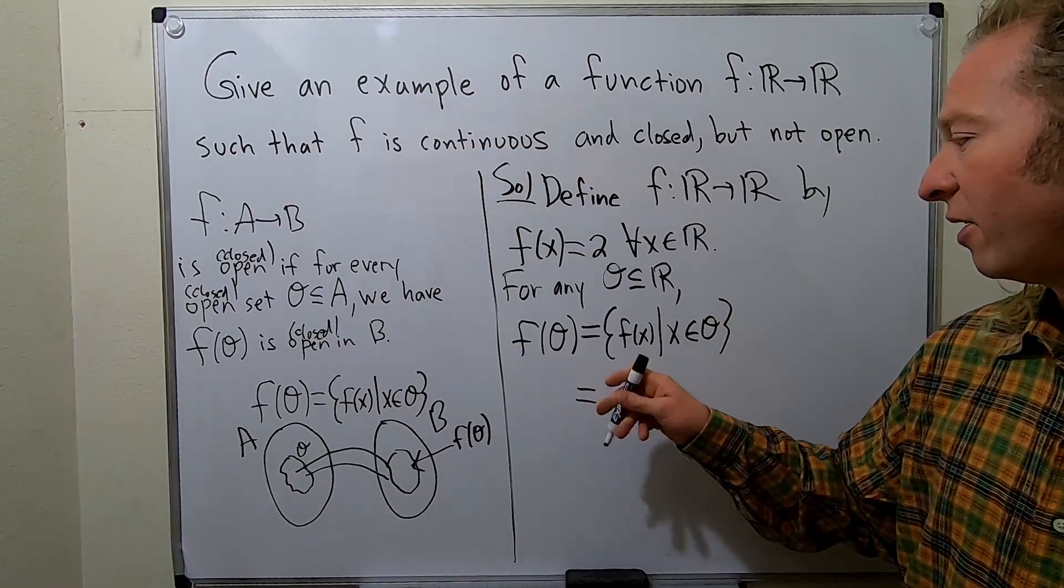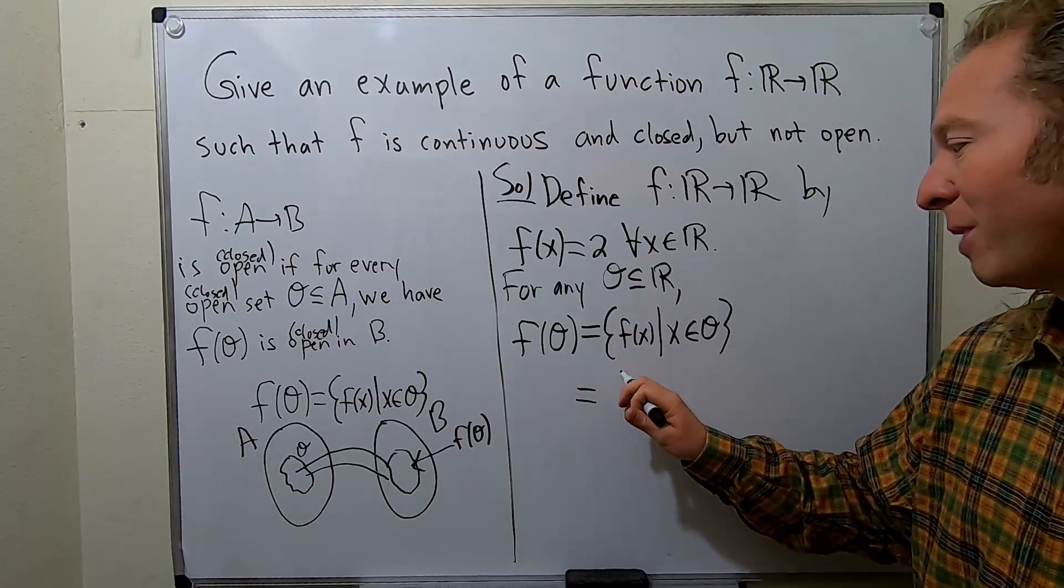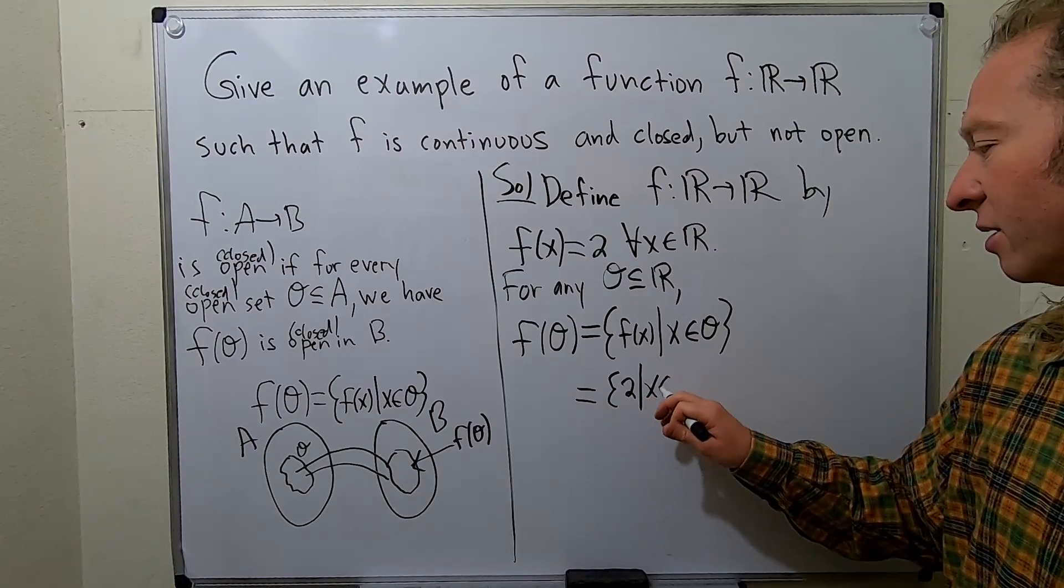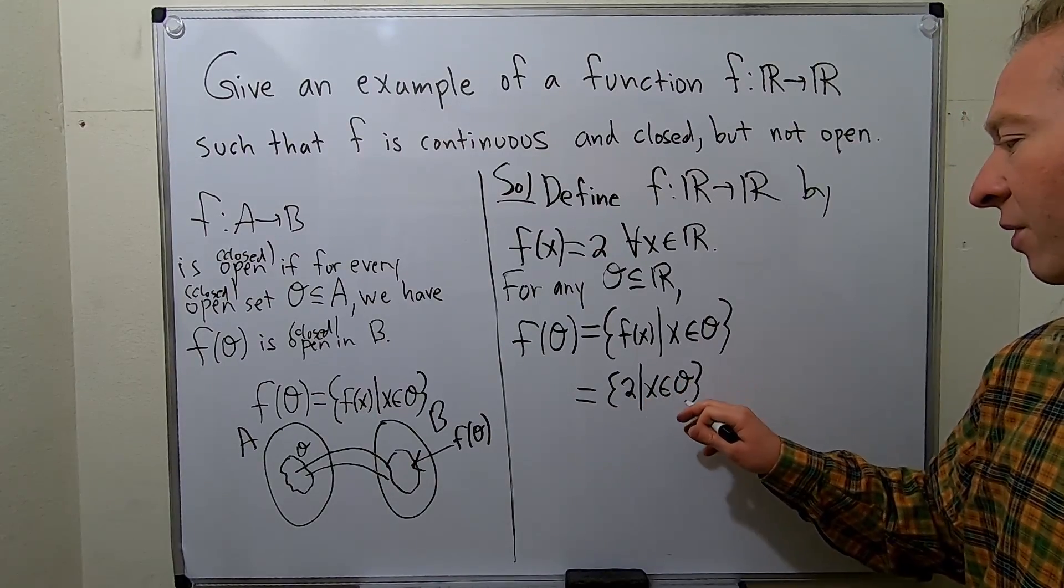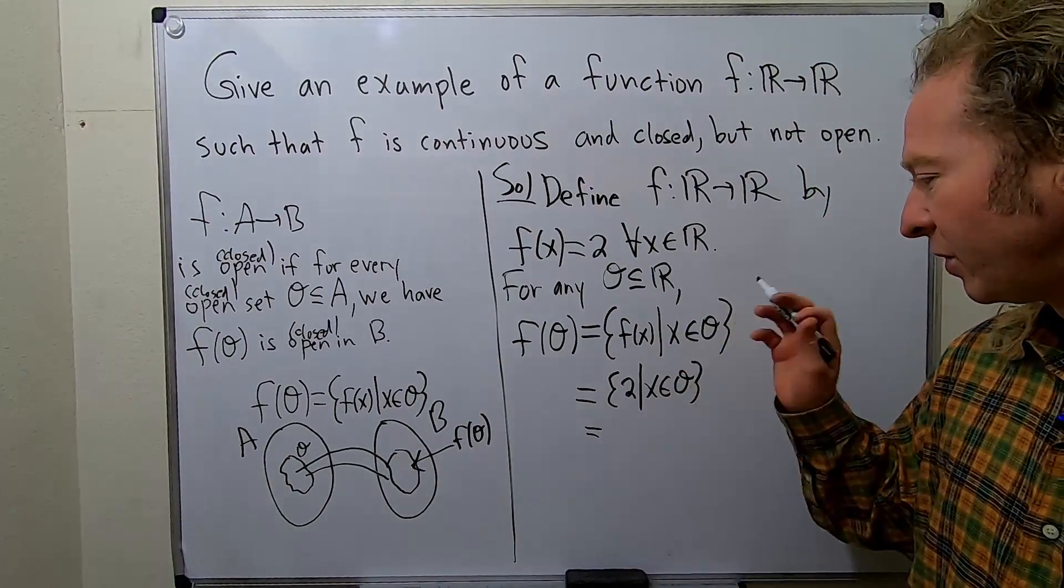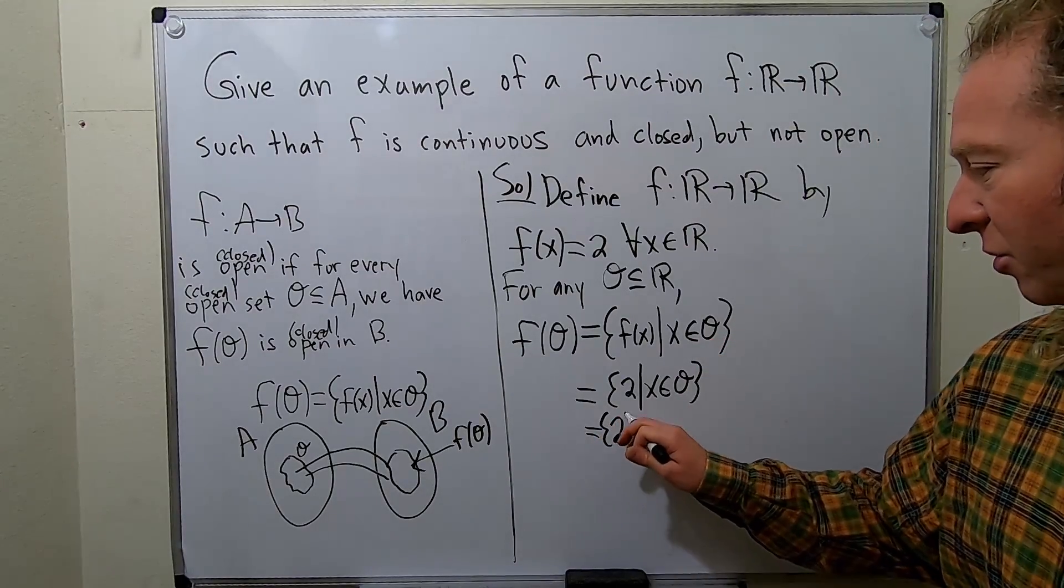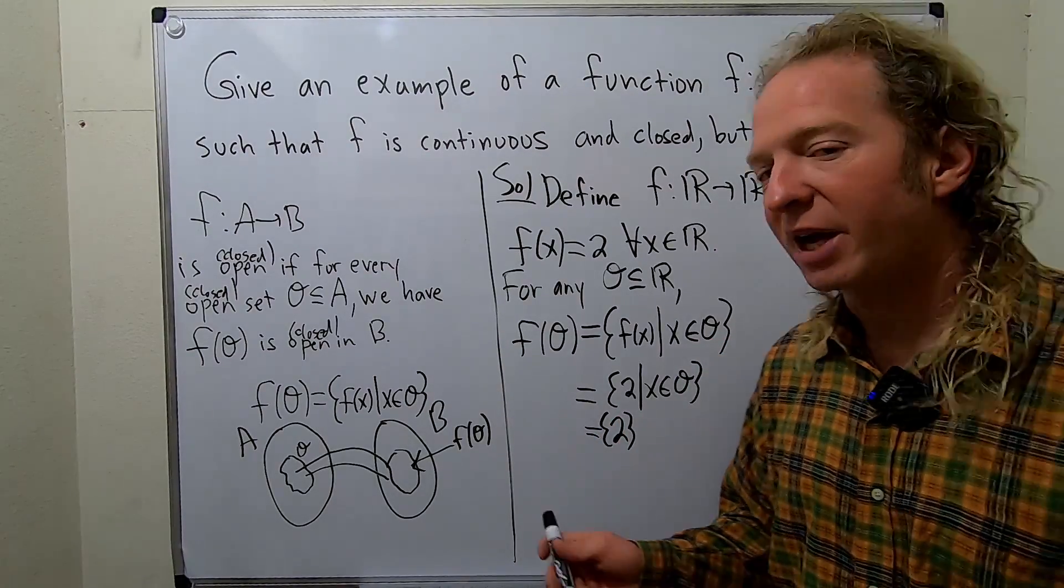So this is the set of, well, f(x) is always two, no matter what. This is two, such that x is in o. So as long as o is not empty, this is always going to be two, the set containing two.